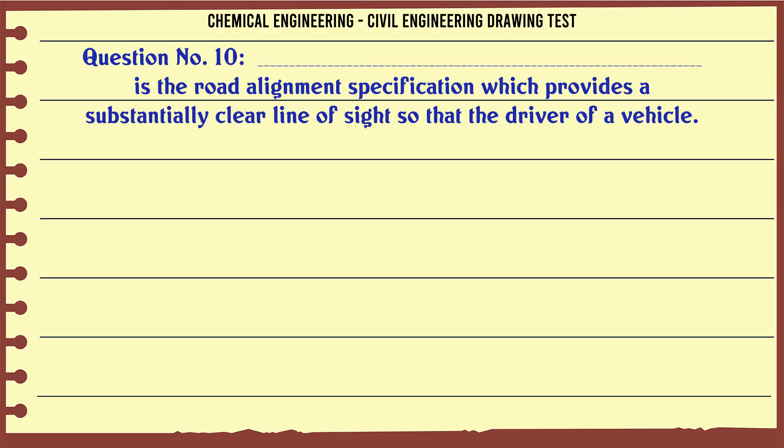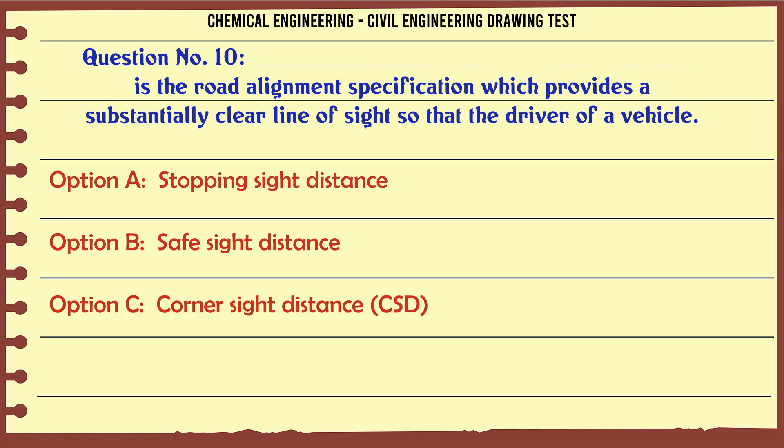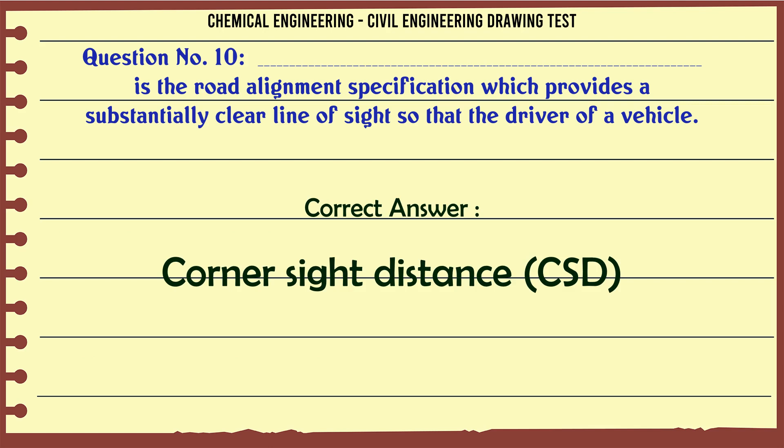Is the road alignment specification which provides a substantially clear line of sight so that the driver of a vehicle. A. Stopping sight distance. B. Safe sight distance. C. Corner sight distance, CSD. D. Intersection sight distance. The correct answer is Corner sight distance, CSD.